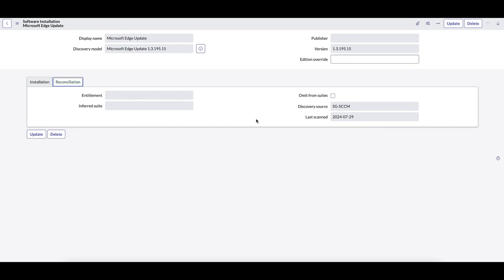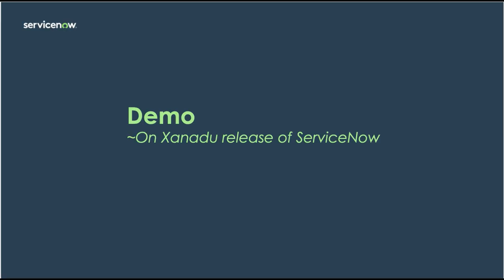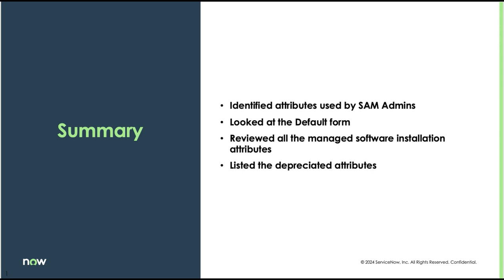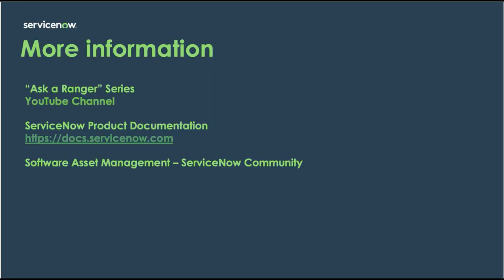So that's all I have here — let's go back and summarize. As we wrap up today, we showed the attributes that a software asset manager uses or tends to use primarily. We looked at the default form and the fields that come on there, reviewed all the managed software installation attributes, and took note of the deprecated attributes — the ones that aren't being used anymore. For more information, you can follow the Ask the Ranger series on YouTube, go to the product documentation, or visit the ServiceNow community. We look forward to seeing you in the next series — thank you!